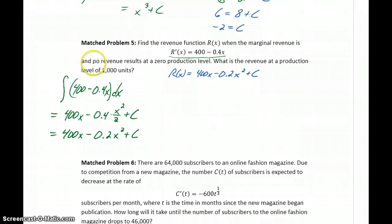So the other information we're given in the problem is that no revenue results at a zero production level. So what we're saying is our function has to pass through the point zero, zero, which is sort of just a common sense point. If we're not producing anything, we're not going to make any money.